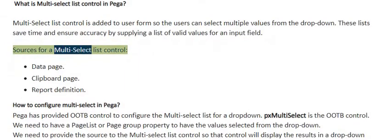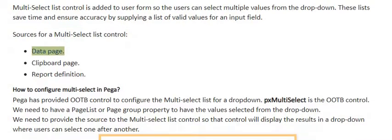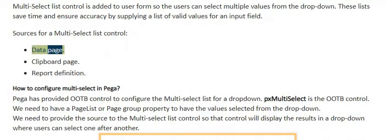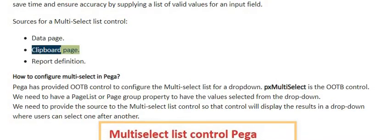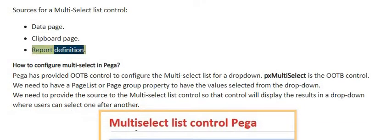Sources for a multi-select list control include: Data page, Clipboard page, and Report definition.